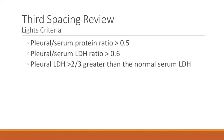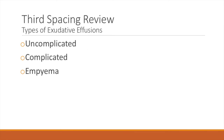Inflammation and inflammatory cells — this all kind of makes sense. If you have all these cells there, there's more protein. As far as LDH goes, it's going to be released from lysed neutrophils. So the more LDH, the more inflammation is happening. Pleural LDH over two-thirds greater than normal serum LDH is one of the criteria. I've never seen a question where that specifically applies, but learn it — you should know it.